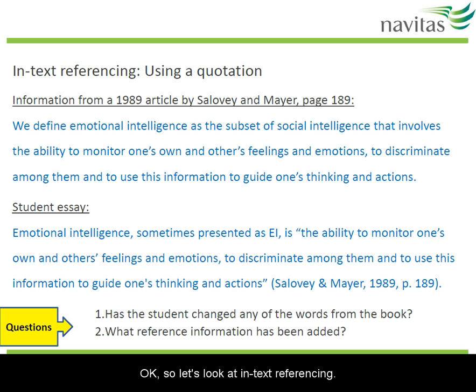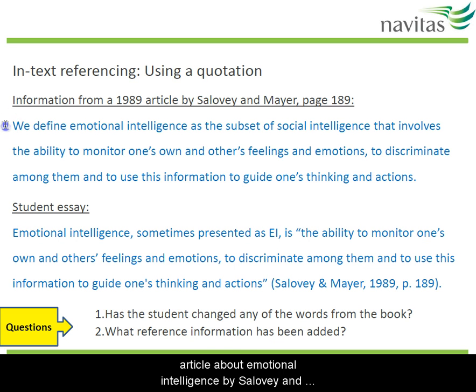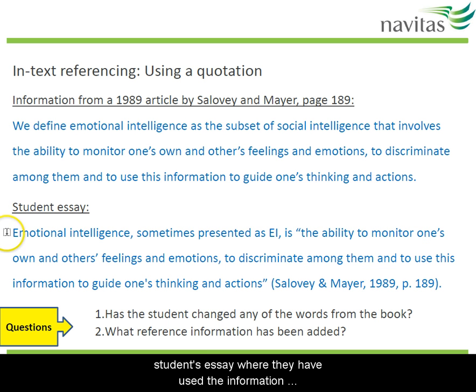So let's look at in-text referencing. That just means the referencing we do in the assignment proper, not the reference list which comes at the end. Here's an example of information from a journal article about emotional intelligence by Silovian Meyer. Below is a section from a student's essay where they have used the information from Silovian Meyer.